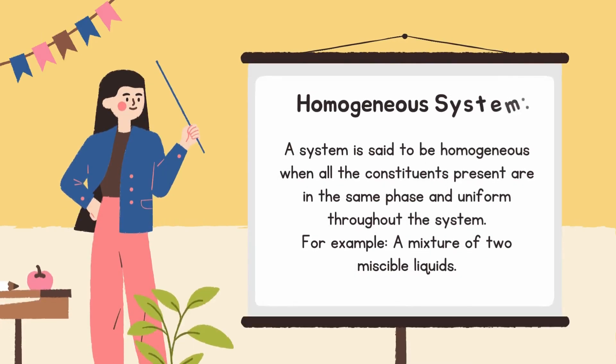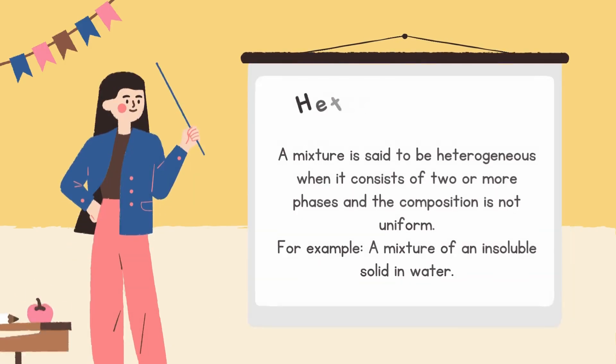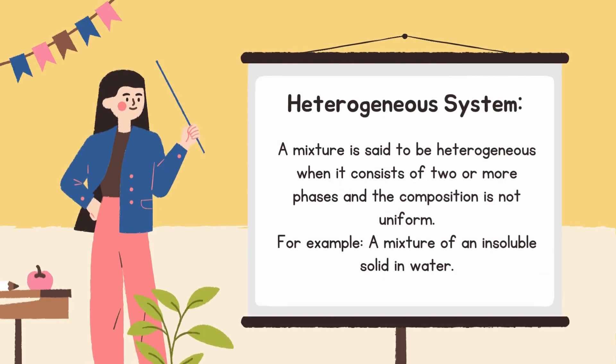What is a homogeneous system? A system is said to be homogeneous when all the constituents are present in the same phase and uniform throughout the system. For example, a mixture of two miscible liquids. Heterogeneous system: a mixture is said to be heterogeneous when it consists of two or more phases and the composition is not uniform. For example, a mixture of an insoluble solid in water.